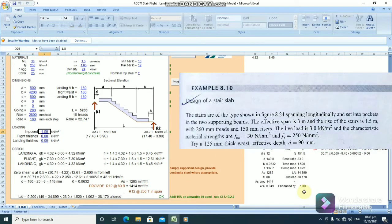From the question, note the parameters. Effective span of the staircase is 3 meters. The rise of the stairs is 1.5 meters. It has a tread of 260 millimeters, 150 millimeters risers. The live load is 3.0 kilonewtons per meter squared.